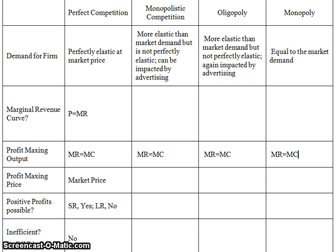For a perfectly competitive firm, since their demand is perfectly elastic at the market price, that's also their marginal revenue. The marginal revenue is how much extra revenue a firm gets whenever it decides to make one more unit of output. So for a perfectly competitive firm, every time a farmer decides to sell one more ear of corn, he gets exactly the price of corn, and this amount doesn't change whether he sells one or a thousand.